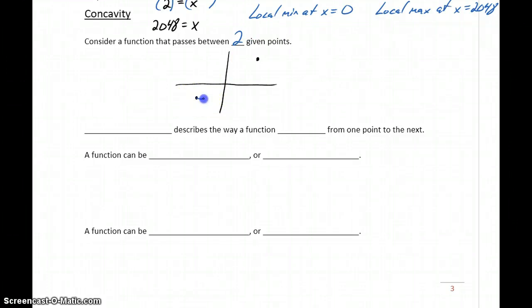One method would be to curve in this upward kind of manner. So that's one way our curve, or the curve of our function, can pass between those two points.